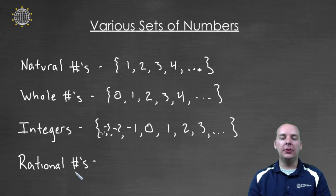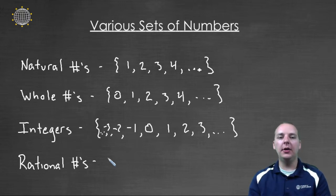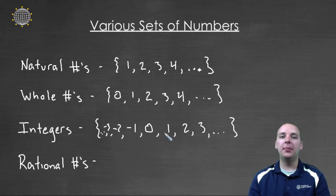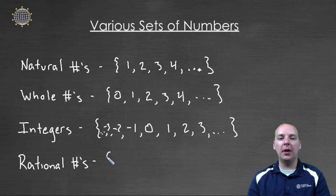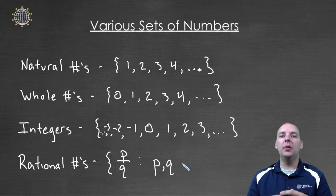Now the rational numbers are a little different. To write a rational number, basically what you have is a fraction where you have one integer divided by another integer. It's a little complicated to just list them separated by commas, so instead I'm going to use something called set builder notation.